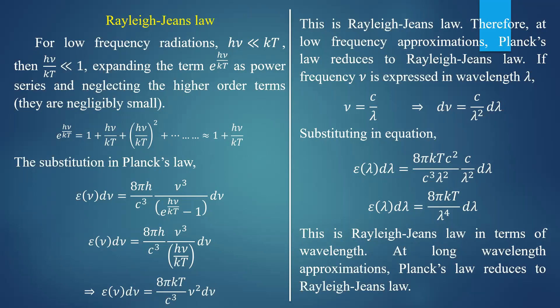Rayleigh-Jeans law is not valid for the entire range of wavelength — it is applicable only for the long wavelength approximation. In the small wavelength approximation, you will get Wien's law of radiation. At a longer wavelength approximation, Planck's law reduces to Rayleigh-Jeans law.